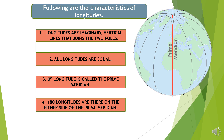Now let us go to the characteristics of longitudes. Longitudes are imaginary vertical lines that join the two poles. All longitudes are equal. Zero degree longitude is called the prime meridian. There are 180 longitudes on either side of the prime meridian — that means on both sides of the prime meridian.